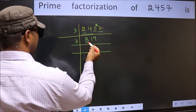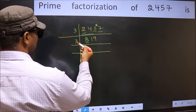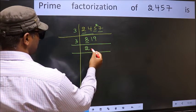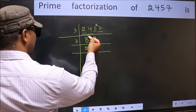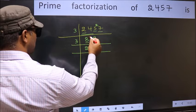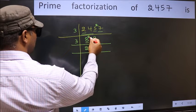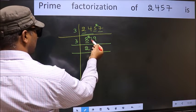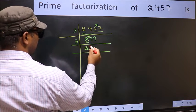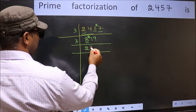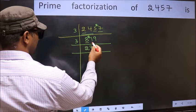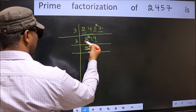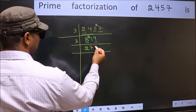First number 8 — a number close to 8 in the 3 table is 3 times 2 = 6. 8 minus 6 is 2, carry forward 2. 21 — when do we get 21 in the 3 table? 3 times 7 is 21. The other number is 9 — when do we get 9 in the 3 table? 3 times 3 is 9.